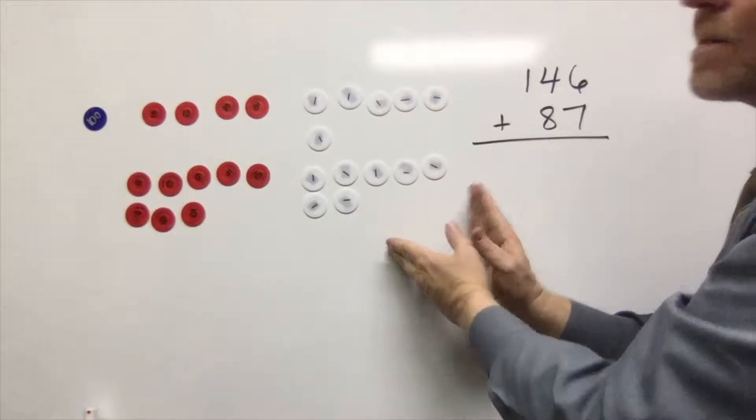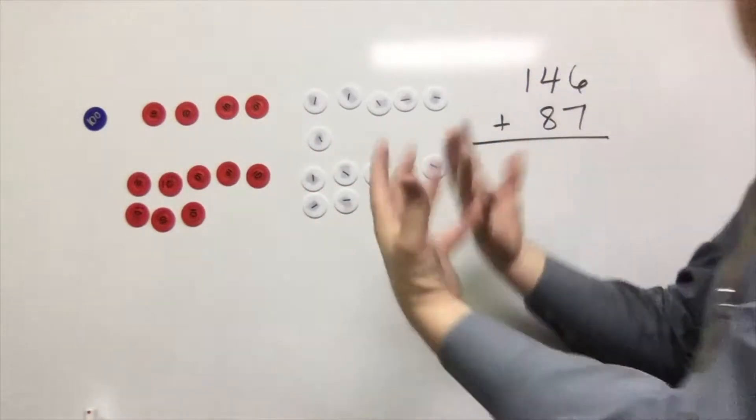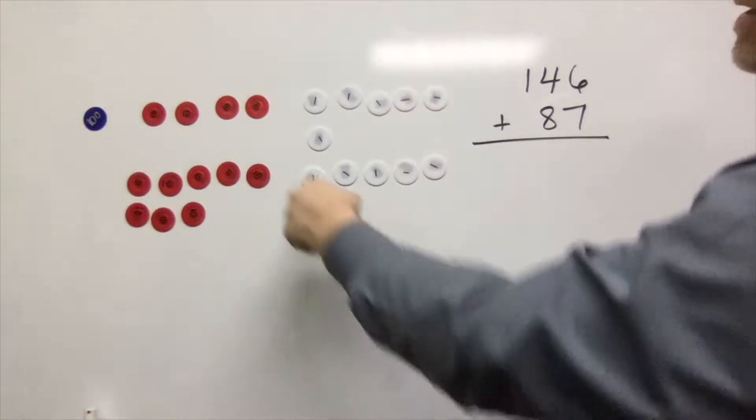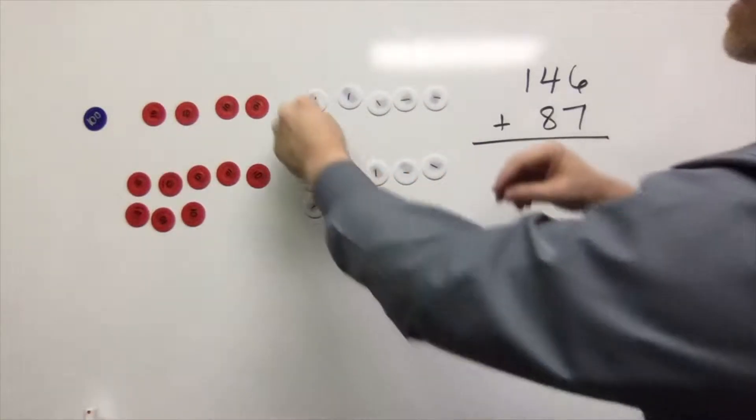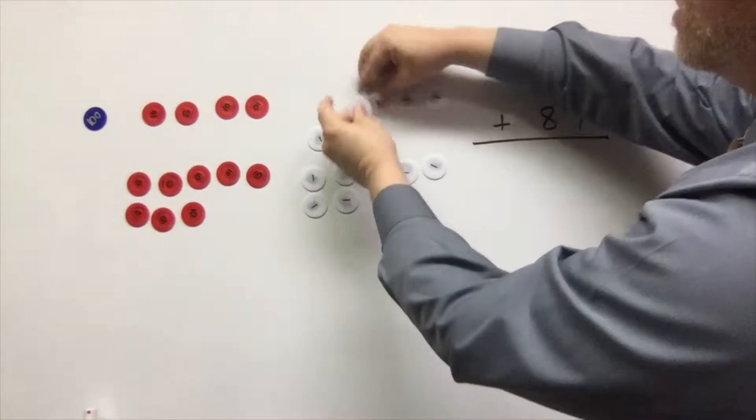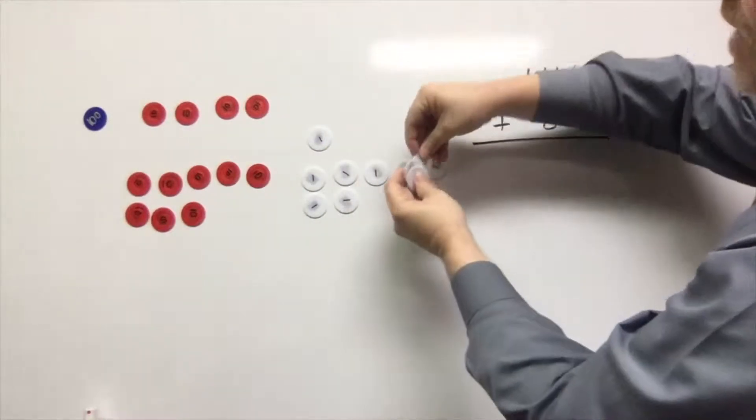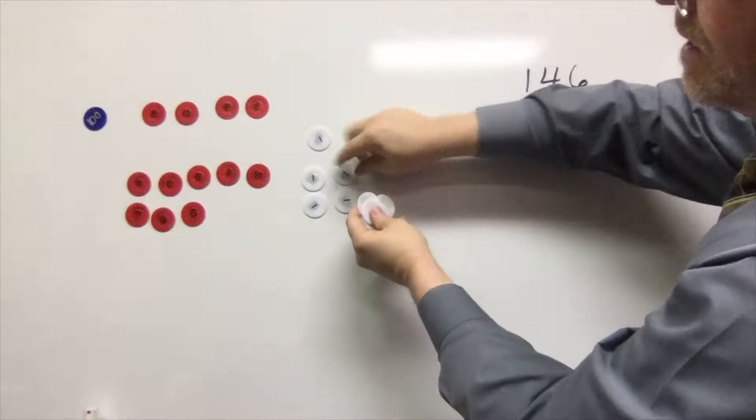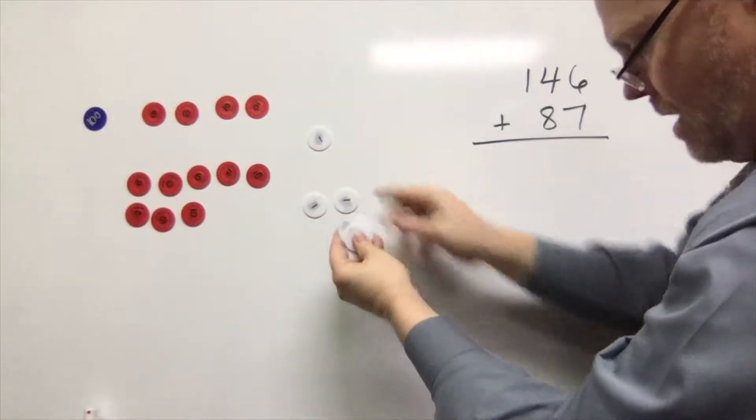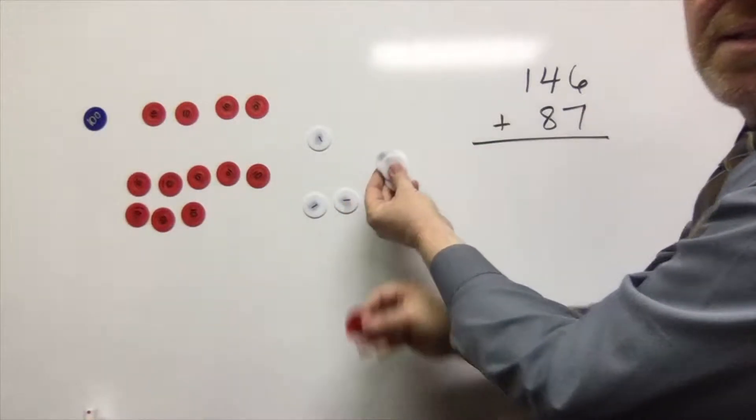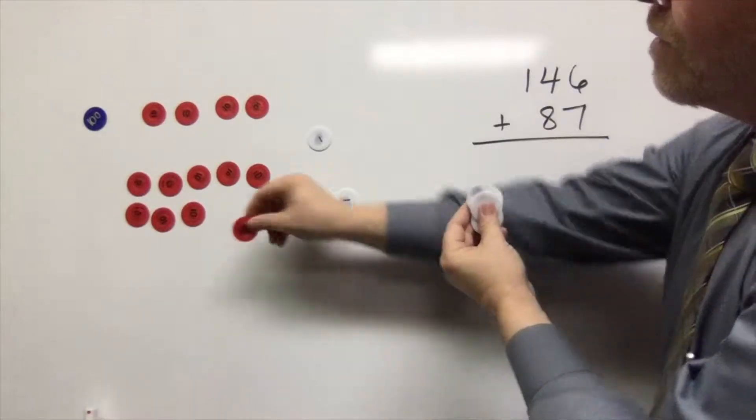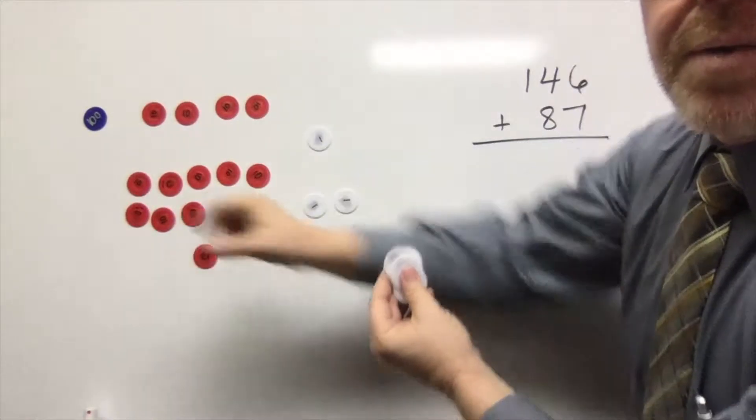So 10 ones equals 1 ten. So we could start to recognize that we definitely have 10 ones. So I'm going to take one, two, three, four, five, six, seven, eight, nine, ten. So these 10 ones, I'm going to cash in for a ten. Boom. There we go.